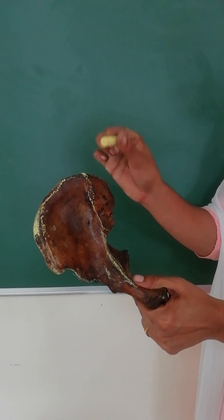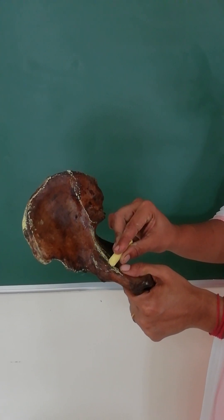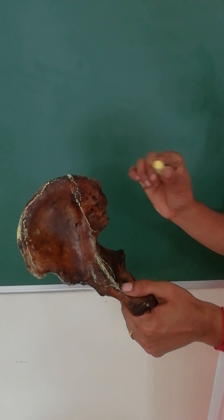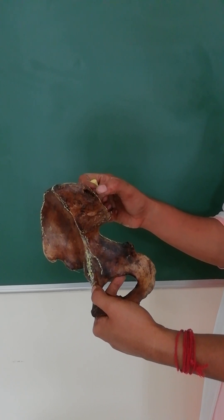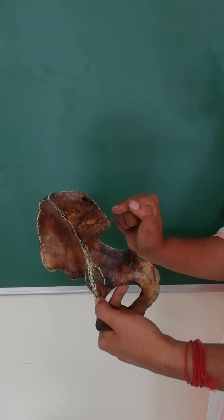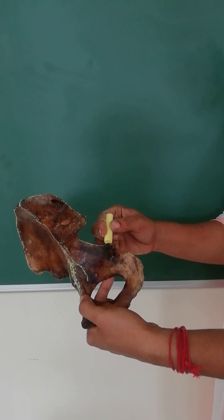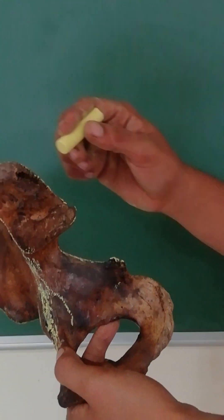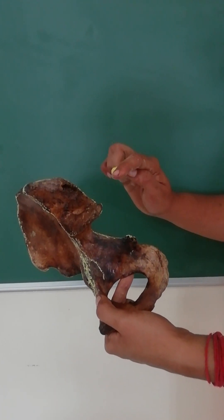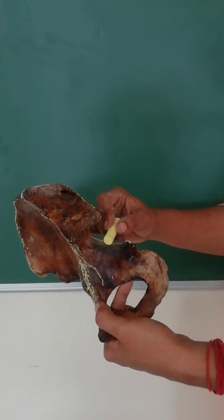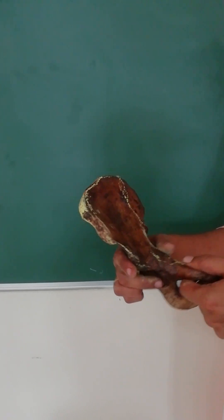The medial border divides the iliac fossa and sacropelvic surface, and continues as the arcuate line. The posterior border has three spines: the posterior superior iliac spine, the posterior inferior iliac spine, and the ischial spine. Between the posterior inferior iliac spine and the ischial spine is a notch called the greater sciatic notch.